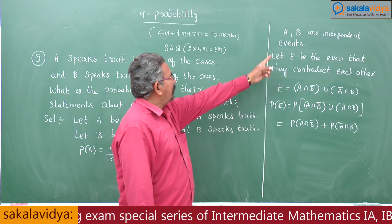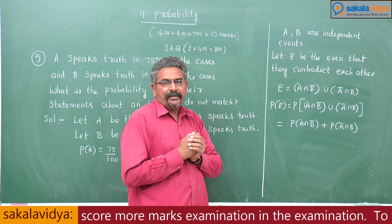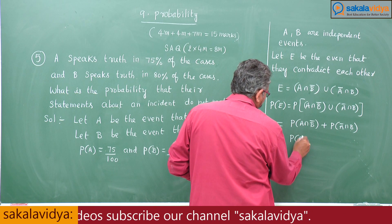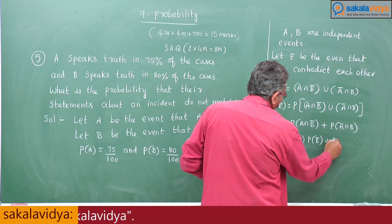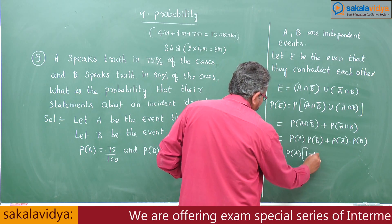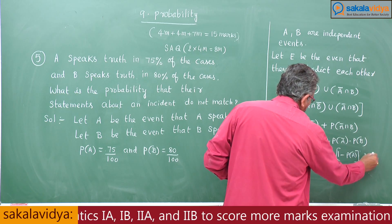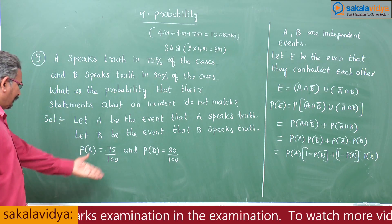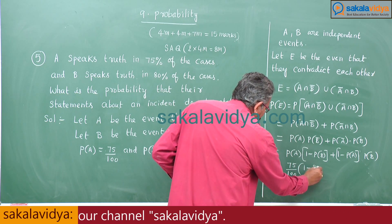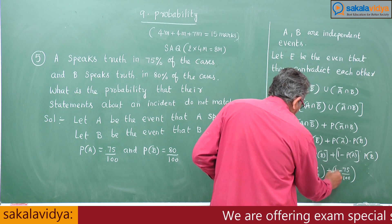Using the addition theorem, this can be written as P of A intersection B-bar plus P of A-bar intersection B. Using the multiplication theorem — since A and B are independent, A-bar and B-bar are also independent — this becomes P of A into P of B-bar plus P of A-bar into P of B. So this equals P of A into (1 minus P of B) plus (1 minus P of A) into P of B.